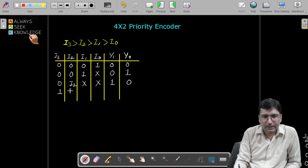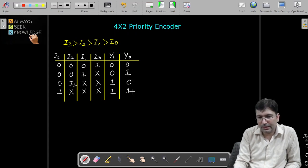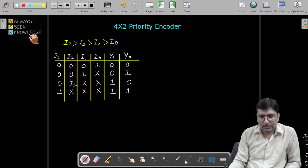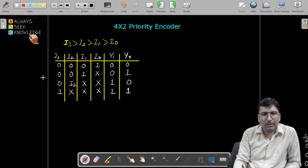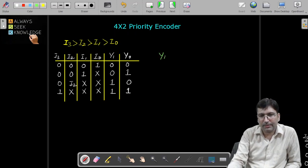We will get both y1 and y0 as one because we are representing three here, and three can be represented in binary like one one. So I hope this truth table is clear to everyone. Now let's find out the boolean expression for y1 and y0.